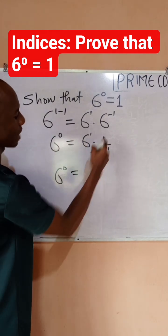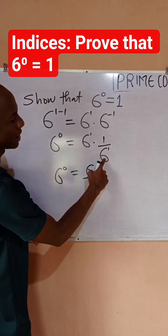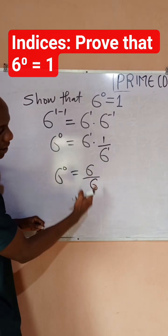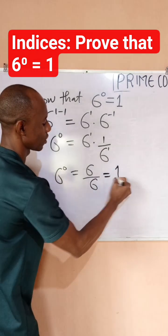All divided by 6 raised to power 1, which is 6. So when you say 6 divided by 6, what will it give us? It will give us 1.